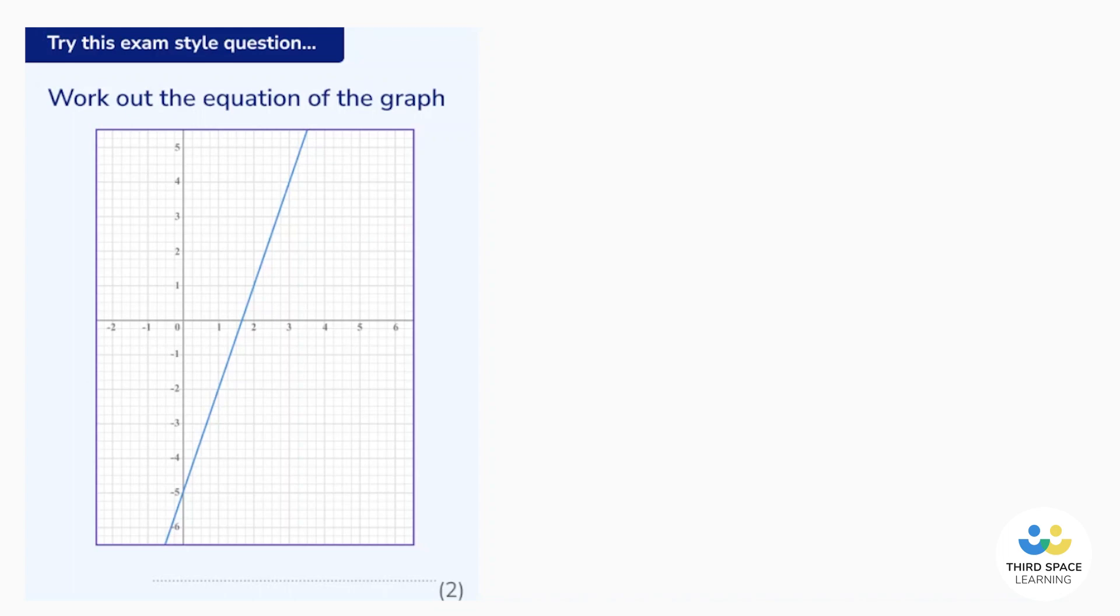Let's have a look at the question. Work out the equation of the graph. We can see we have a straight line graph. Now we know that the general equation of any straight line is y equals mx plus c, where m is the gradient and c is the y-intercept.